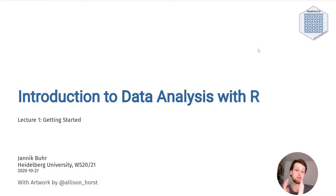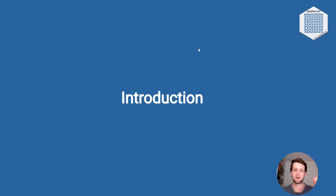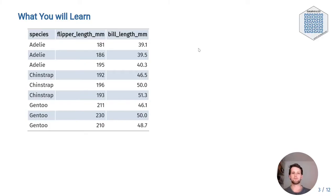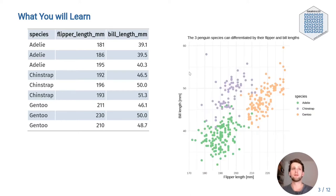Throughout your scientific career and potentially outside of it, you will encounter various forms of data. Maybe you do an experiment and measure the fluorescence of a molecular probe, or you simply count the penguins at your local zoo. Everything is data in some form or another. But raw numbers without context are meaningless, and tables of numbers are boring to look at and they often hide the actual structure behind the data. So in this course, you will learn to create pretty and insightful visualizations, compute different statistics on your data, and also what those statistical concepts mean. From penguins to p-values, I got you covered.